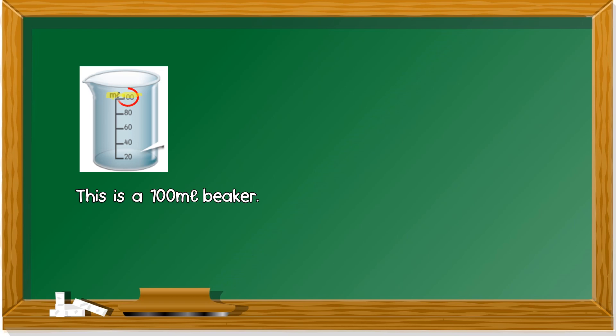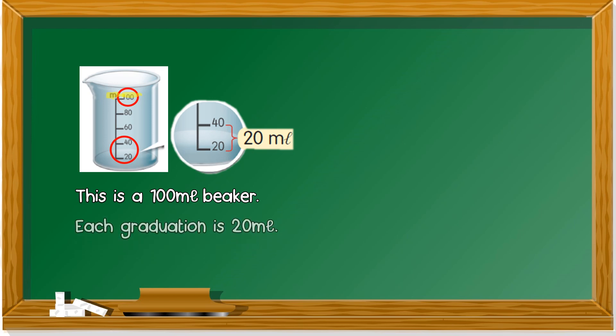And let's take a look at the graduation. So in between two lines, it's called graduation. And each graduation is 20 milliliter. Jarak di antara dua garis, 20 milliliter.